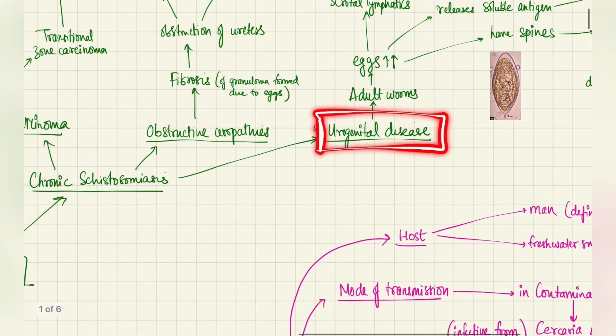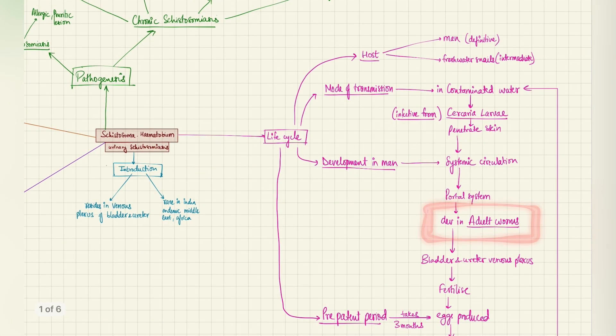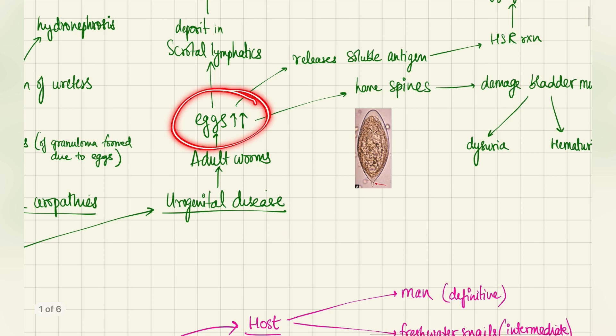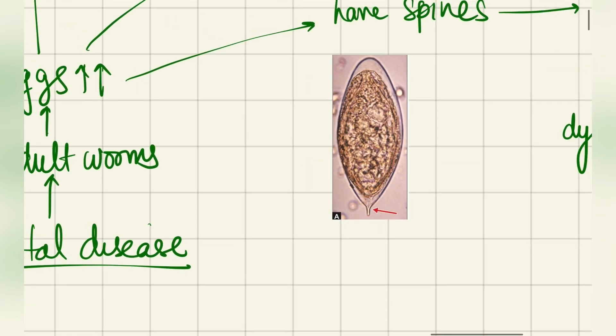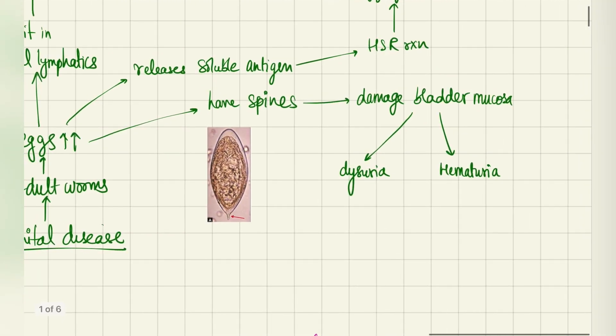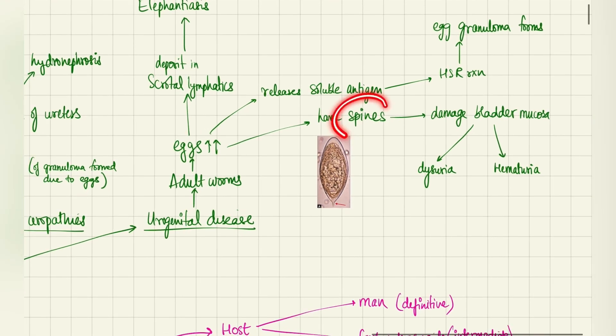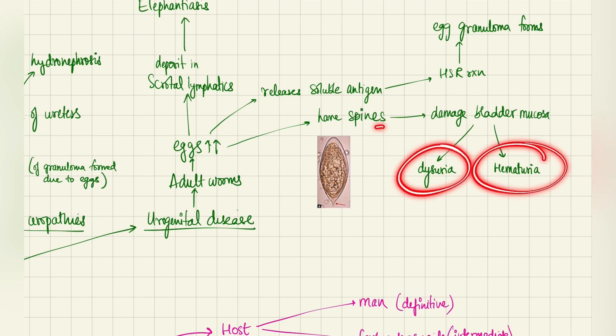First of all, coming to the urogenital disease. These adult worms, which we talked about in the life cycle, when they lay the eggs, these eggs increase in number. The problem is these eggs tend to have terminal spines, which can be seen in this diagram. This is the terminal spine I'm talking about. These spines are actually responsible for the pathogenesis because these spines damage the bladder mucosa. This is what causes hematuria and dysuria, that means blood in the urine and painful urination. This is because of the spines on the eggs which cause these two manifestations.